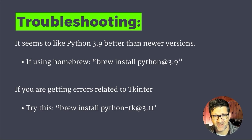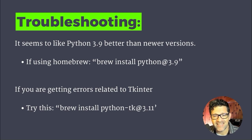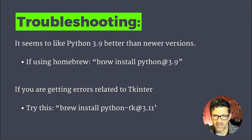If none of that makes any sense, make sure to go back and check out my video on cloning your first repository — I have a link to that in the description. And if you're getting errors related to TKinter, which I was, try this: 'brew install python-tk@3.11'. Again, I'm not a coder. I'm not sure exactly what's going on there, but these seem to help.